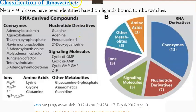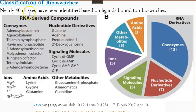Coming to the classification of the riboswitches, nearly 40 classes have been identified in different bacteria, fungi, algae, and very few in eukaryotes. Based on the type of the ligands or metabolites which bind to the riboswitches, they are categorized into four major groups. The first major group belongs to RNA-derived compounds. These are the ligands which bind to the riboswitches, and based on the ligand, the riboswitch is given a class name. For example, thiamine pyrophosphate riboswitch is one class. There are also nucleotide derivative-based classes of riboswitches.